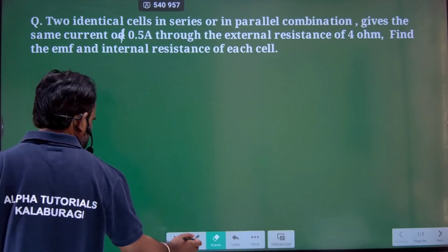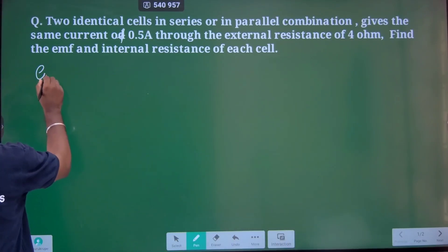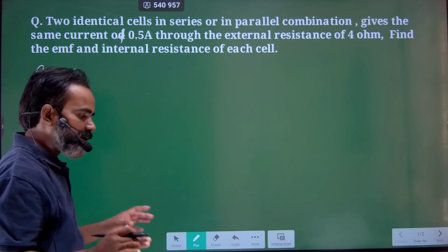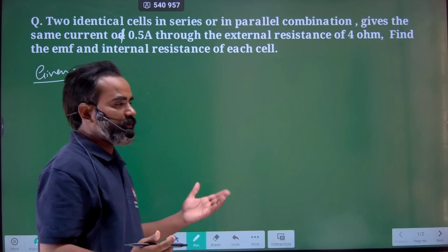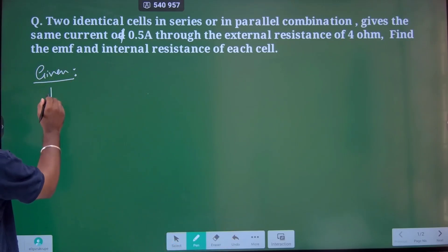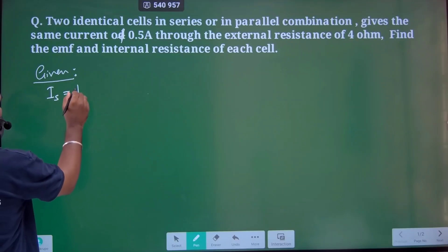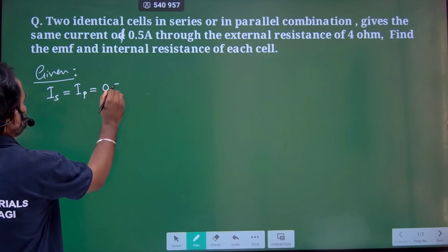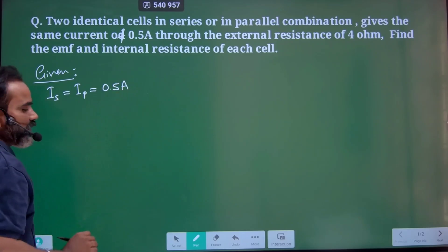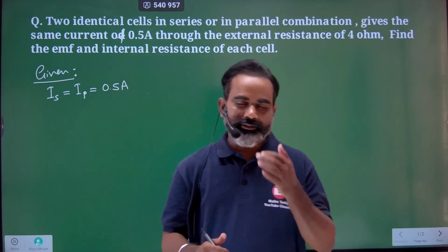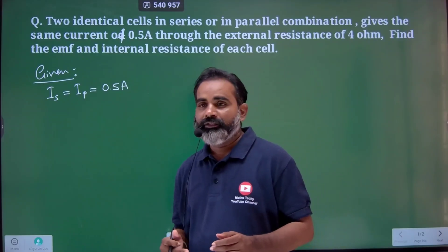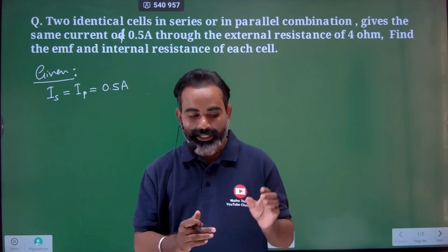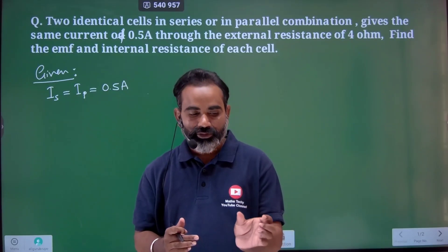As per the question, let's write the given information. It is given that current is 0.5 ampere, with cells in series connection and cells in parallel connection. The external resistance value is also given.